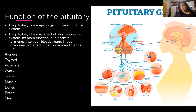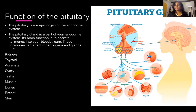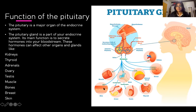The hypothalamus sends releasing hormones to trigger hormone secretion from the anterior pituitary. These include adrenocorticotropin releasing hormone (ACTRH), gonadotropin releasing hormone (GnRH), thyrotropin releasing hormone (TRH), and growth hormone releasing hormone (GHRH). These cause release of GH, ACTH, TSH, gonadotropins, and MSH from the anterior pituitary, which then go and affect the respective organs as shown in the diagram.